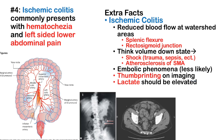Fact 4: Ischemic colitis commonly presents with hematochezia and left-sided lower abdominal pain. Ischemic colitis occurs when there's reduced blood flow at watershed areas — areas with less perfusion that are first affected in low-flow states. In the colon, the high-yield watershed areas are the splenic flexure and the rectosigmoid junction. States like traumatic injury with blood loss or sepsis cause this ischemic colitis presentation with hematochezia and left-sided lower abdominal pain.